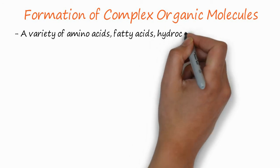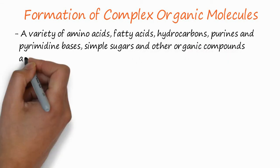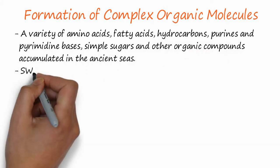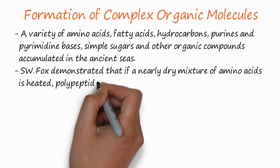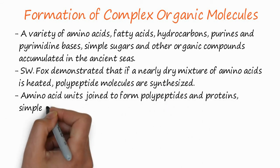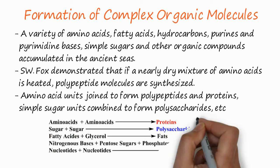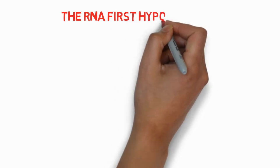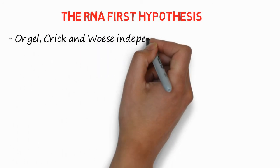How were complex organic compounds formed? In this theory, a variety of amino acids, fatty acids, hydrocarbons, purine and pyrimidine bases, simple sugars, and other organic compounds accumulated in the ancient seas. Then Sydney Fox demonstrated that if a nearly dry mixture of amino acids is heated, polypeptide molecules are synthesized. Amino acids joined to form peptides and proteins, simple sugars combined to form polysaccharides — amino acids combined to form proteins, sugars combined to form carbohydrates, and so on.